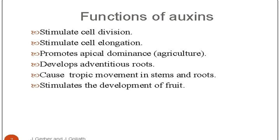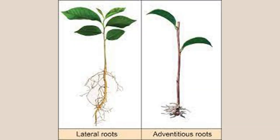The functions of auxins are: they stimulate cell division — in order for mitosis to occur, we need auxins. They stimulate cell elongation, meaning cells become longer. They promote apical dominance. They help develop adventitious roots. They cause tropic movement in stems and roots — that is the movement we see when the sunflower moves towards the light. They also stimulate the development of fruit, so whenever you see a tree with apples and oranges, auxins are responsible for that.